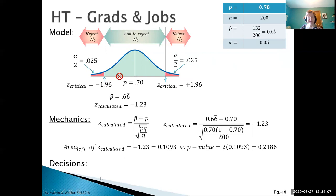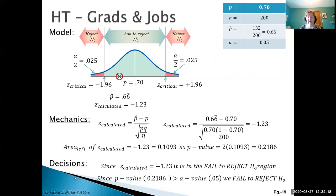Moving on to our decision phase, we've already seen this part. Our Z calculated of negative 1.23 is in the fail to reject region. Using our P-value comparison, our P-value of 0.2186 is a lot bigger than our alpha value of 0.05, so again we fail to reject H naught. Both methods yield the same result.